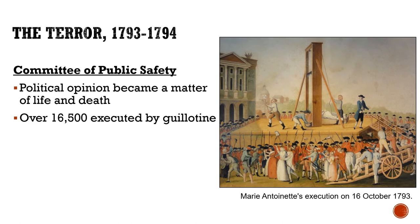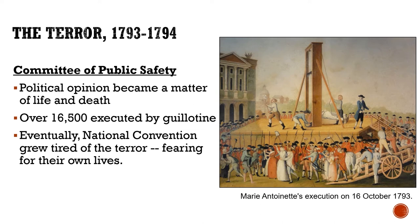Public opinion became a matter of life and death. Eventually the Jacobins became victims of their own success. Famously, Robespierre stood in front of the National Convention holding a list and said there were names from this very chamber to be executed — and of course everyone in the National Convention thought their names were on it. That was the final push. The National Convention grew tired of the Terror, fearing for their own lives, and finally soldiers were sent to arrest the Jacobins and it all came to an end.